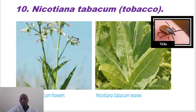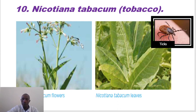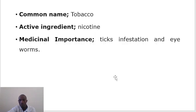The other plant used in Uganda and East Africa is Nicotiana, which is tobacco. It's used to treat tick infestation — they make a paste of the leaves of the tobacco and smear it around where the ticks are infested. Nicotiana tobacco contains nicotine as its active ingredient. It's also used in treatment of eye worms.